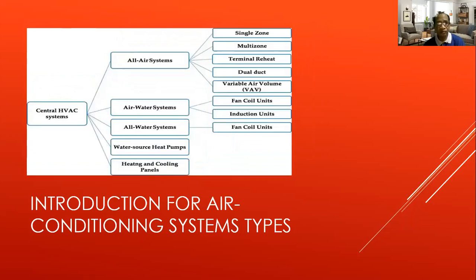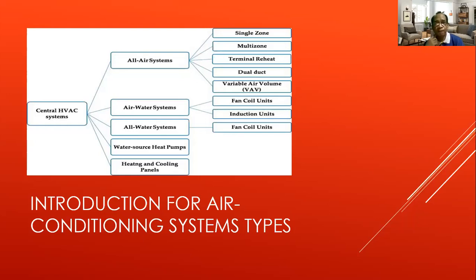Central HVAC systems include: all-air systems (single zone, multi-zone, terminal reheat, dual duct, and variable air volume or VAV); air-water systems (fan coil unit and induction unit); all-water systems (fan coil unit); and water source heat pump with heating and cooling panels. The water system involves cooling towers — large pans on top of buildings with water — that cool the hot refrigerant pipes. Each floor has air ducting where the cool air enters.